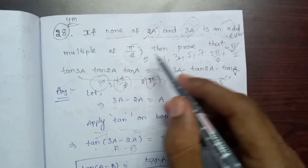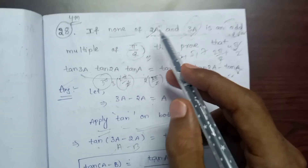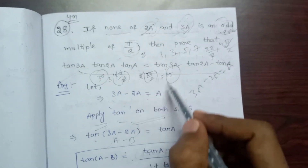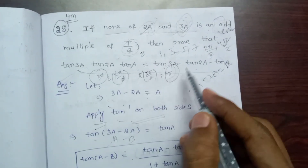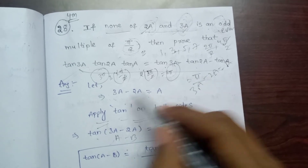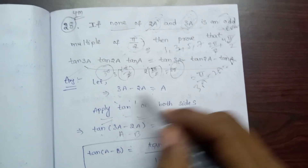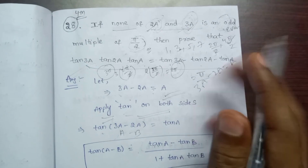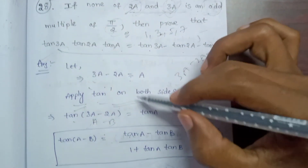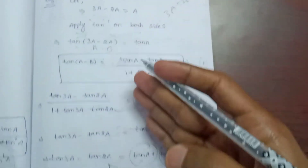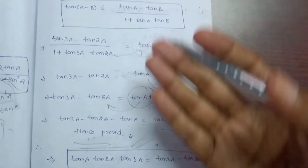So we have shown the even multiple of pi by 2 distinction. If you don't have any confusion, you can use this method. Here we can also verify using the RHS approach.